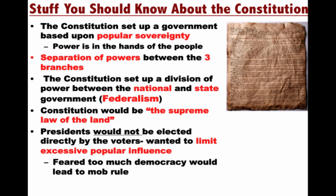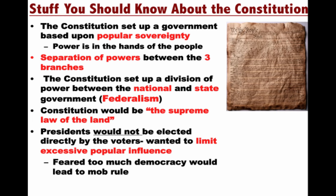Lastly, under the Constitution, presidents would not be elected directly by the voters. In fact, the framers of the Constitution wanted to limit excessive popular influence — they feared too much democracy would lead to mob rule. Remember, these were men of property and money. So they created the Electoral College as the means of electing the President of the United States.